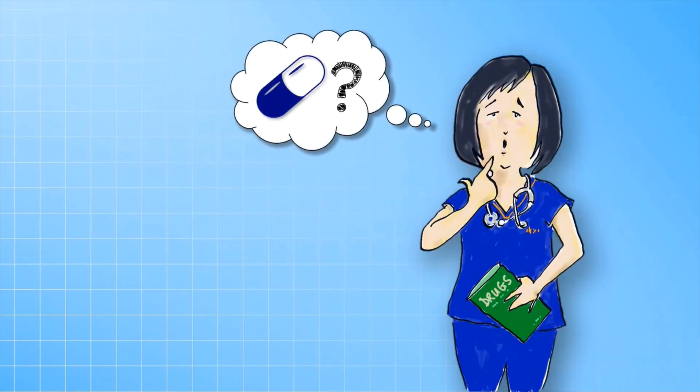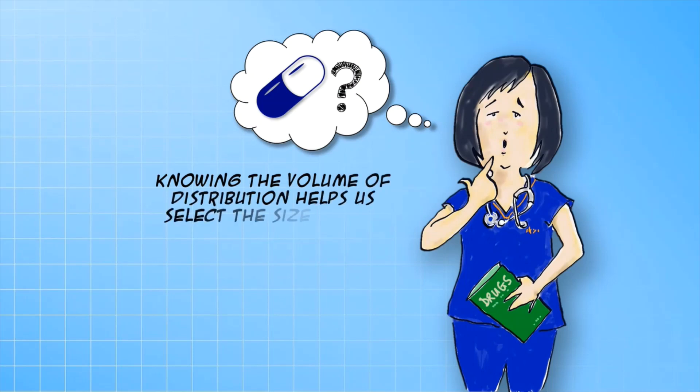So, how would it help us to know about the volume of distribution? Well, for starters, it will help us get an idea of the starting concentrations in the circulation, and if we have the target concentration in mind, knowing the volume of distribution will help us devise the starting dose regimen.